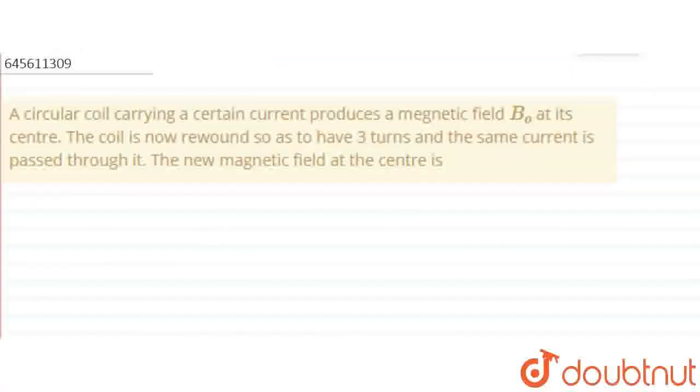So, the question is: a circular coil carrying certain current produces the magnetic field B-note at the center. The coil is now rewound so as to have three turns and the same current is passed through it. The new magnetic field at the center is?